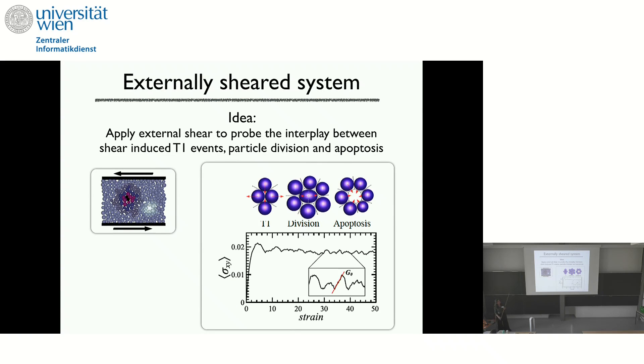And the next step, we confine this into a fixed volume and shear it. And the question is how the different events will interact together with each other to change the flow behavior. So you have the usual T1 events, so particle rearrangements that lead to these stress releases, but we also have these division events and apoptosis events. And what you can do is to shear the system in the stationary state and try to understand how to model the rheology.